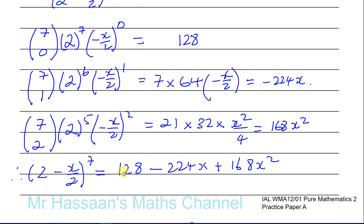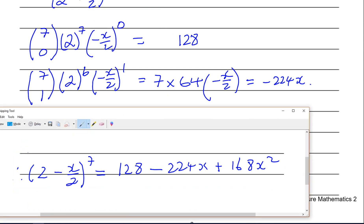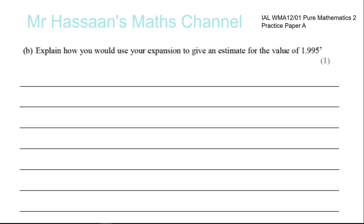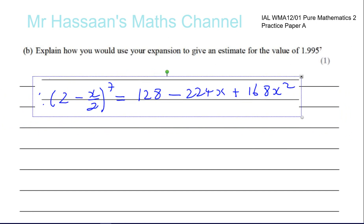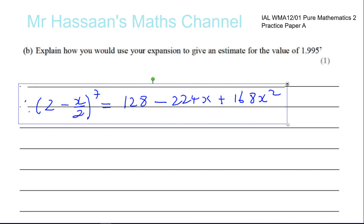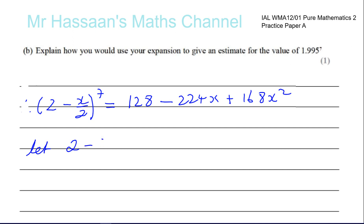Now let's move on to Part B, which is just a small explanation. It says: explain how you would use your expansion to give an estimate for 1.995 to the power of 7. Basically, they'll ask you to find the value, so I'll do both for your understanding. What we would do is let 2 minus x over 2 equal 1.995, because that's what we want to raise to the power of 7. So find the value of x such that 2 minus x over 2 equals 1.995.